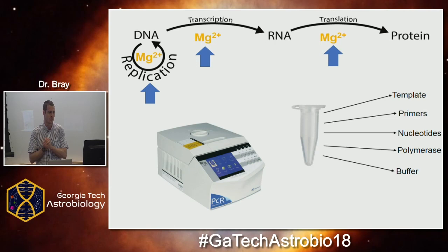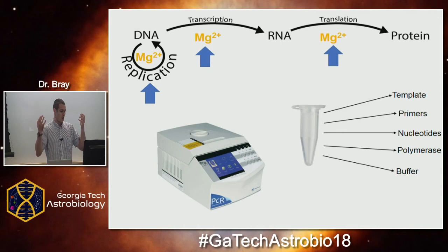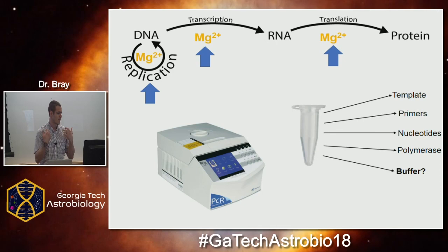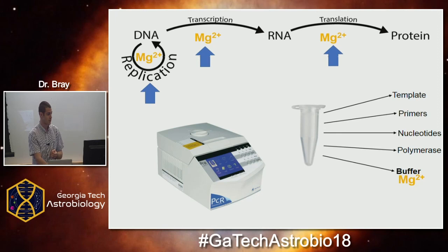As an example, most of you have set up PCR reactions — a DNA replication reaction used to amplify DNA. In that reaction you have template DNA, primers, nucleotides, your polymerase enzyme, and a buffer. One of the major components of that buffer is magnesium, because these enzymes are so dependent on it. You see the same thing in in vitro transcription reactions or translation kits.